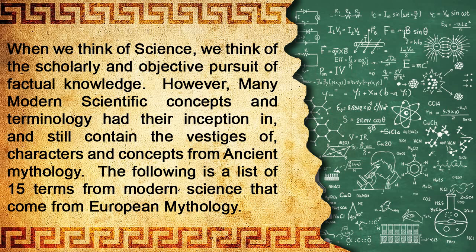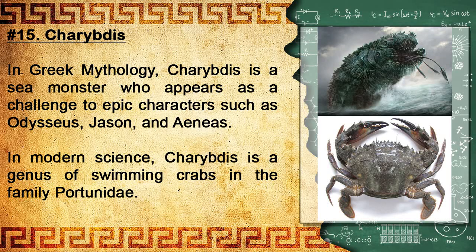Number 15: Charybdis. In Greek mythology, Charybdis is a sea monster who appears as a challenge to epic characters such as Odysseus, Jason, and Aeneas. In modern science, Charybdis is a genus of swimming crabs in the family Portunidae.